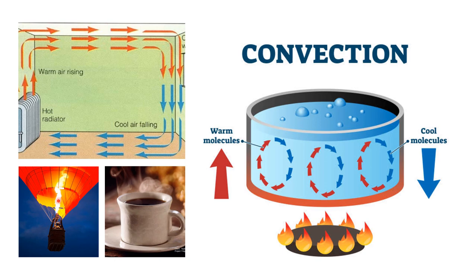For the hot air balloon example, a hot air balloon rises because warmer air is less dense than the cool air. Since the balloon is less dense than the air around it, it becomes positively buoyant. Another example of convection is a room with a heater. The heater heats the air inside the room. Warm air rises because it is less dense, then the cool air on top gets pushed down because it is heavier, to replace the warm air that has risen. So convection currents take place inside a room with a heater.